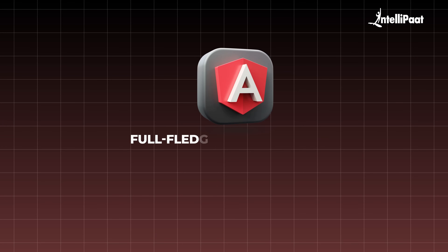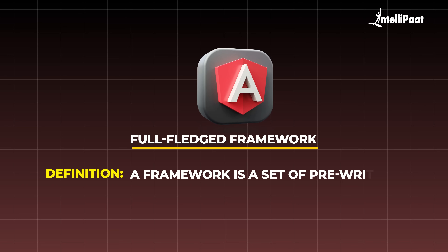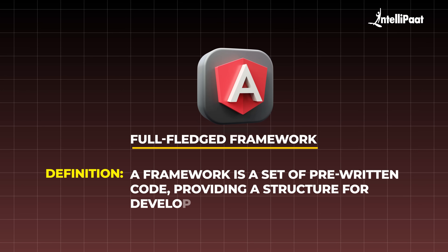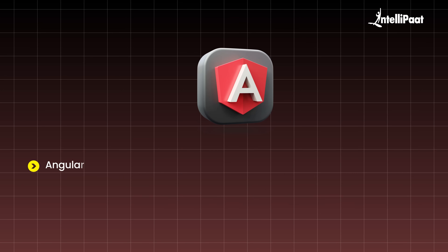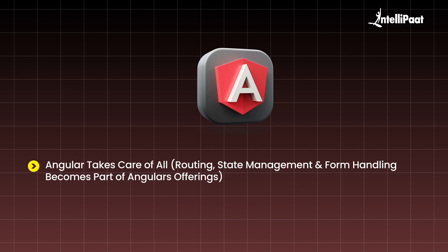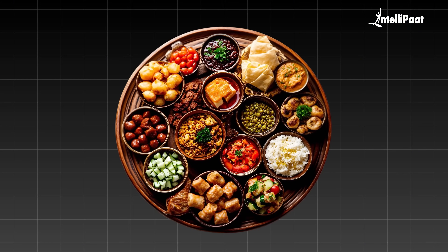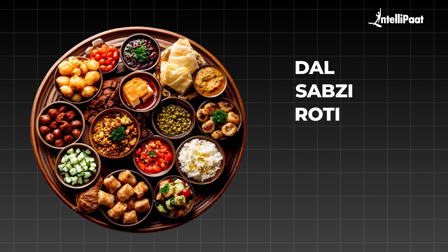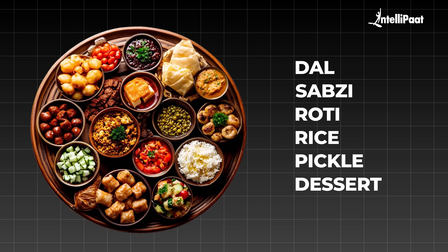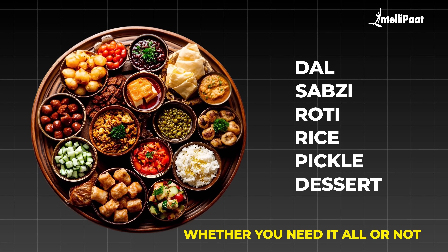Angular, on the other hand, is a full-fledged framework, meaning it is a set of pre-written code that provides a structure for developing software applications. It includes built-in features, so instead of becoming an option, features like routing, state management, and form handling are included within the Angular package. This is more like a thali — you get a full structured meal with everything included: dal, sabji, roti, rice, pickle, dessert. Whether you need it or not, it's there.